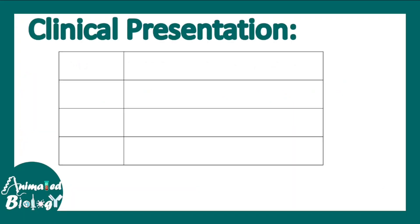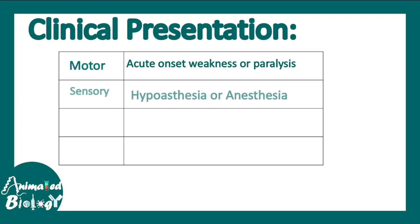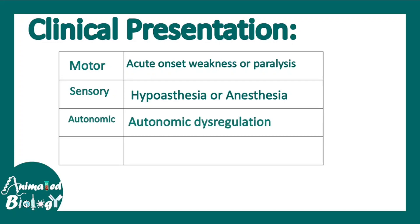Symptomatology includes motor symptoms like acute onset of weakness or paralysis, sensory symptoms like lack of sensation or no sensation at all — that is hypoesthesia or anesthesia. Autonomic symptoms include dysregulation like loss of bladder and bowel control, and reflexes may present as hyporeflexia or hyperreflexia.